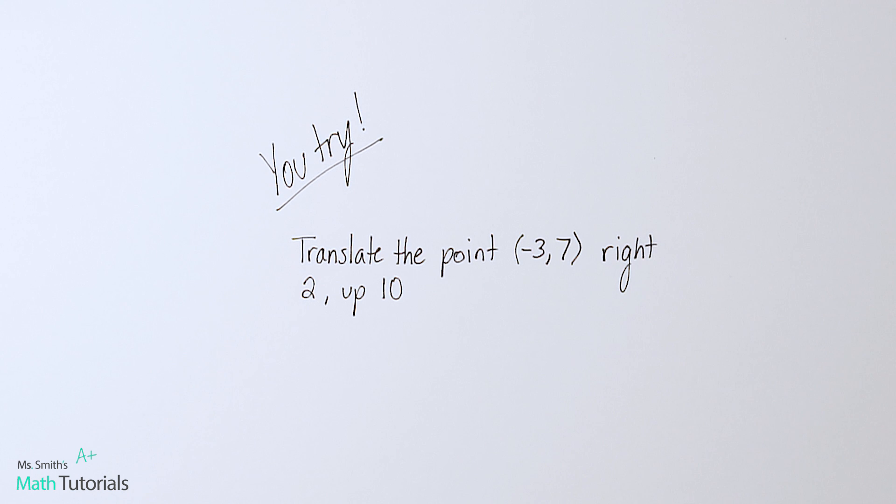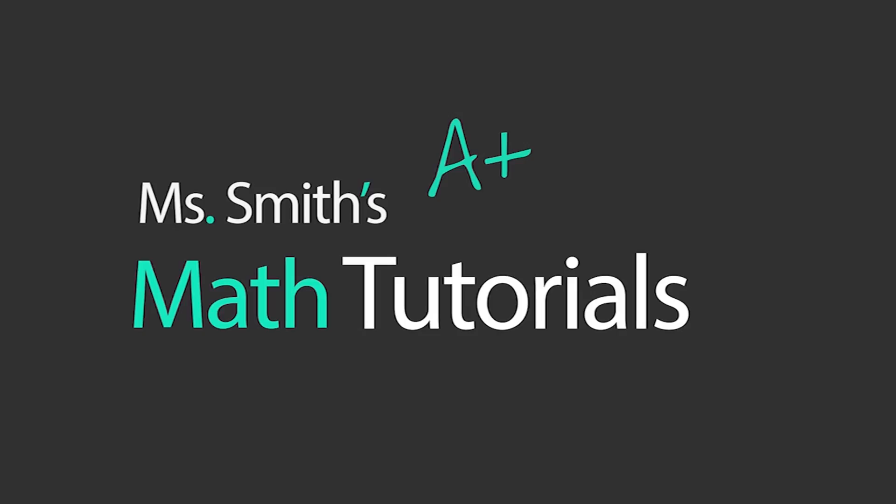I want you guys to try this one. Translate the point (-3,7) right 2 units and up 10 units. If this is the pre-image point, what will be the image point? I will post the answer in the description below this video. This has been Ms. Smith's Math Tutorials.